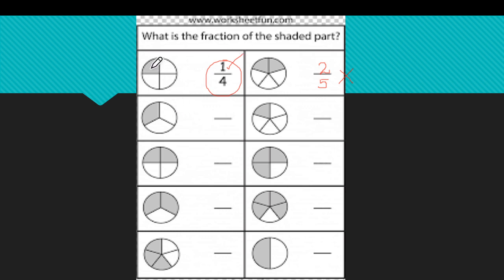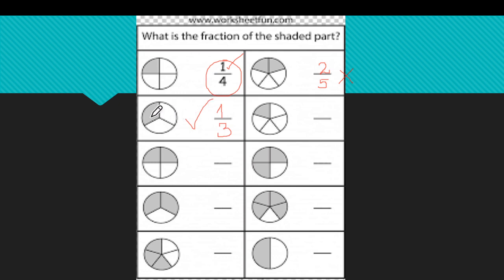Let's count here. How many equal parts do we have? One, two, three — three equal parts. Write number three at the bottom. How many are shaded? One. One out of three is shaded. Is this a unit fraction? Yes, it is, because only one part is shaded and we have number one on the top.